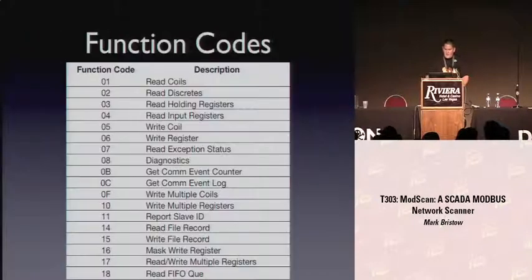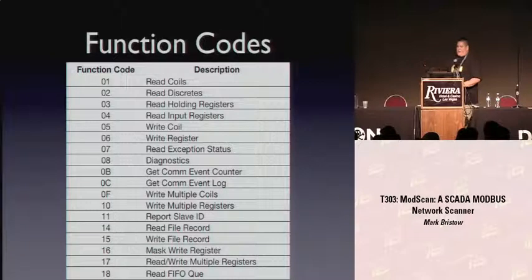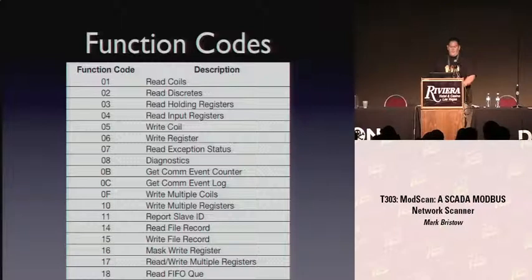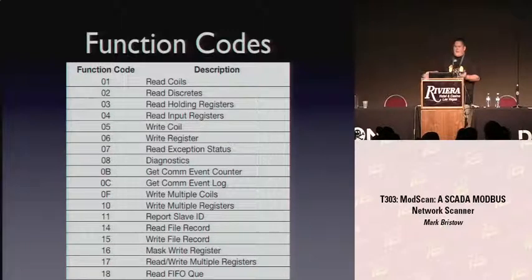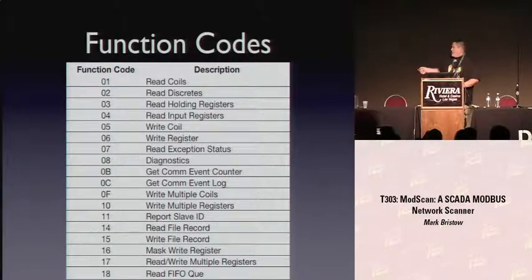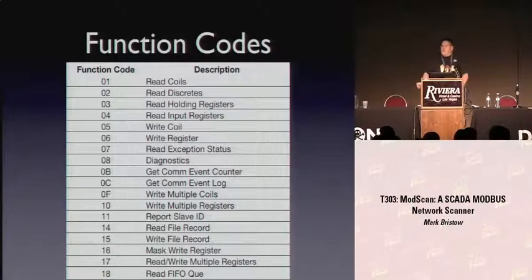I said I'd get into the function codes. Here's the function code reference. Some important ones are read coils - these read functions are to read data, which becomes very useful in a scanner because we don't want to scan with a write, because some devices are read-only. But you can write data to devices, which can be fun if the device is, say, a breaker and you want to trip it. You just write, switch a bit somewhere, and all of a sudden the power goes out in Nevada.